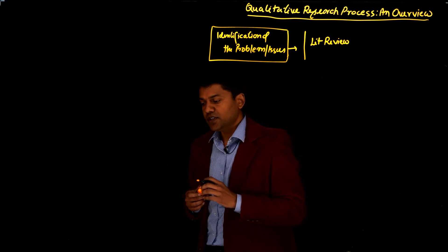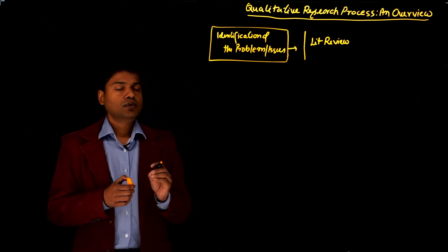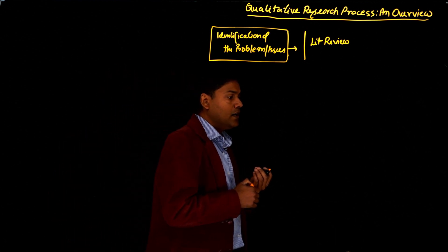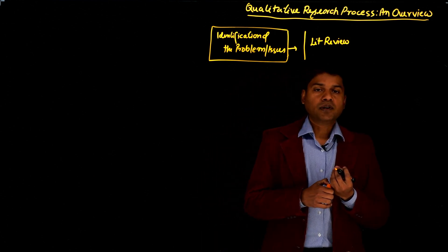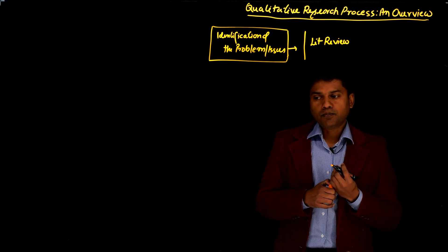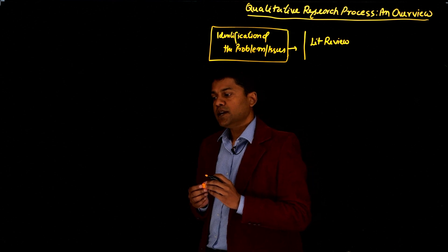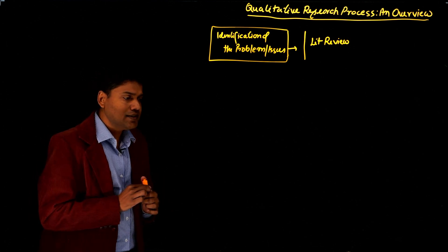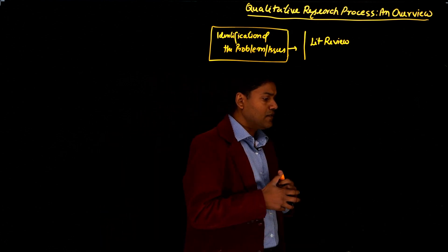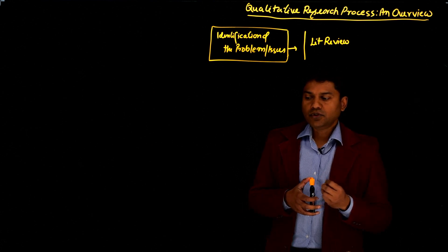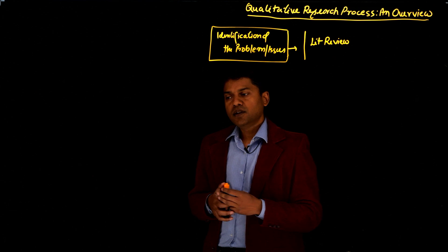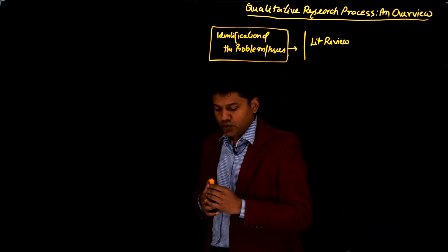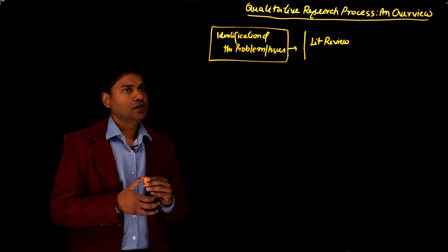Once you know the topic and the issue you want to explore, you need to do a literature review. Literature review is important because it gives you a sense of how many studies have previously been done on this topic, what those studies have focused on, and what were the findings of those studies. It gives you a sense of the status of the problem in terms of how much we know about this issue and what work has already been done.